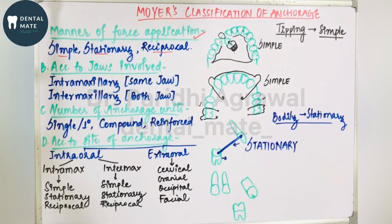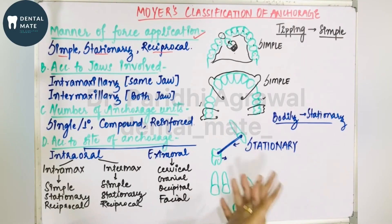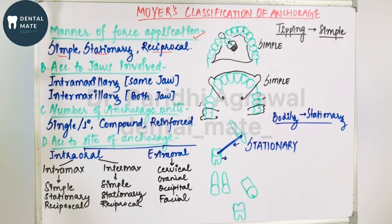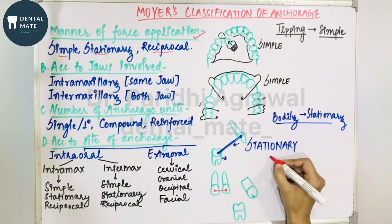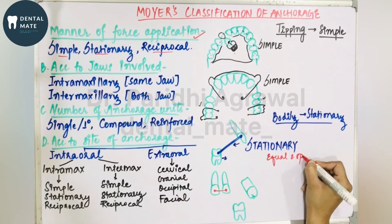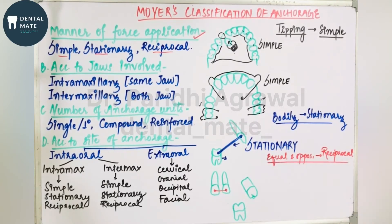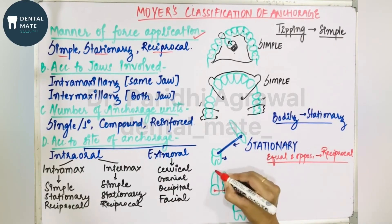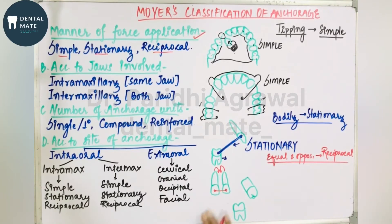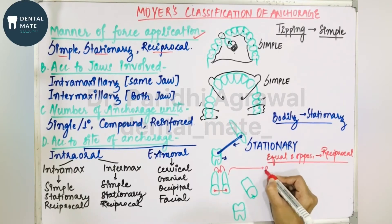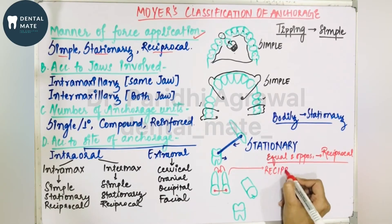The third type is reciprocal anchorage. In reciprocal anchorage, two sets of teeth move in equal extent but in opposite directions. For example, using elastic for the closure of a midline diastema — suppose two central incisors have a midline diastema, we use elastic and both teeth move equally and in opposite directions. This equal but opposite movement is reciprocal anchorage.